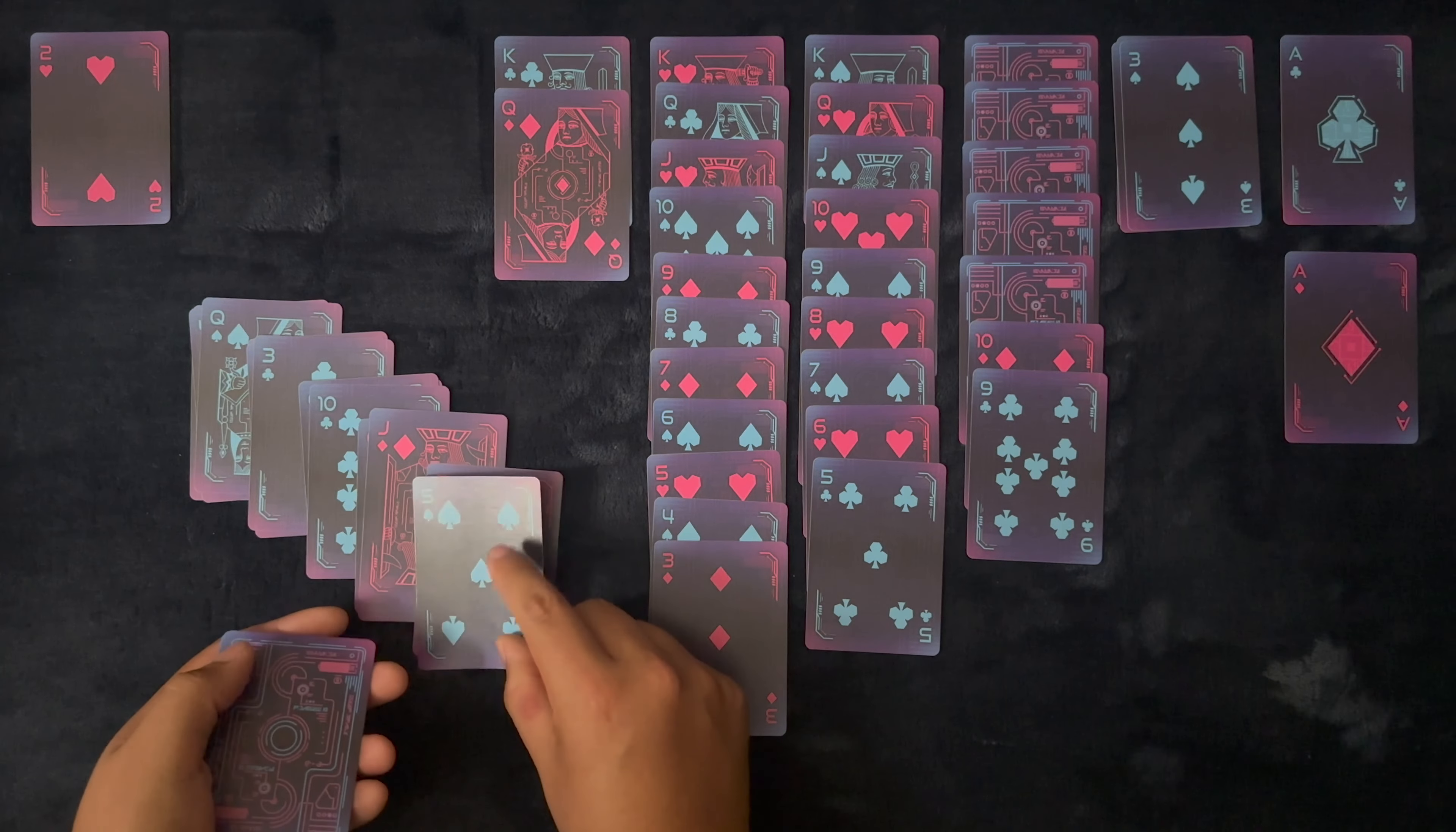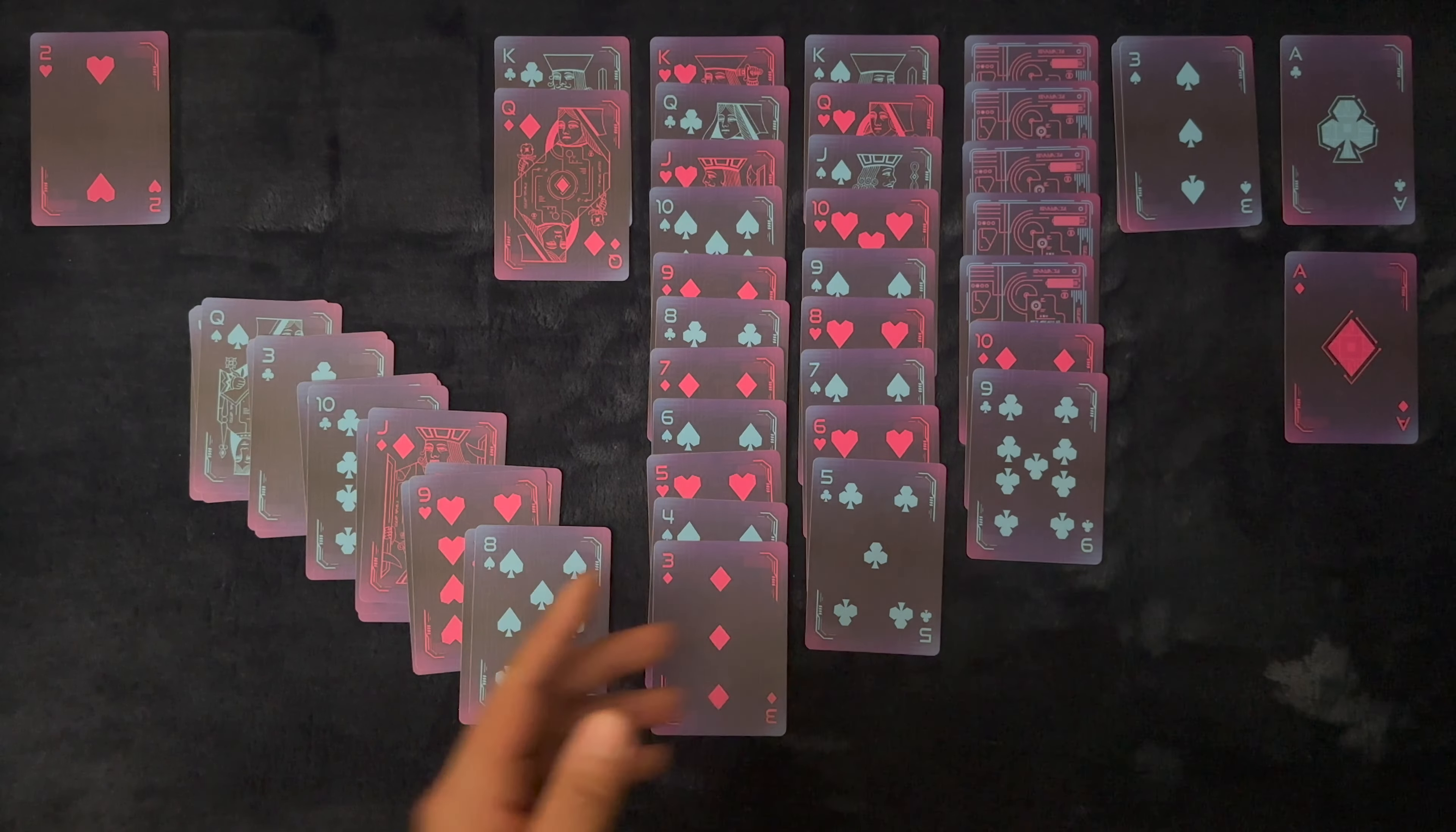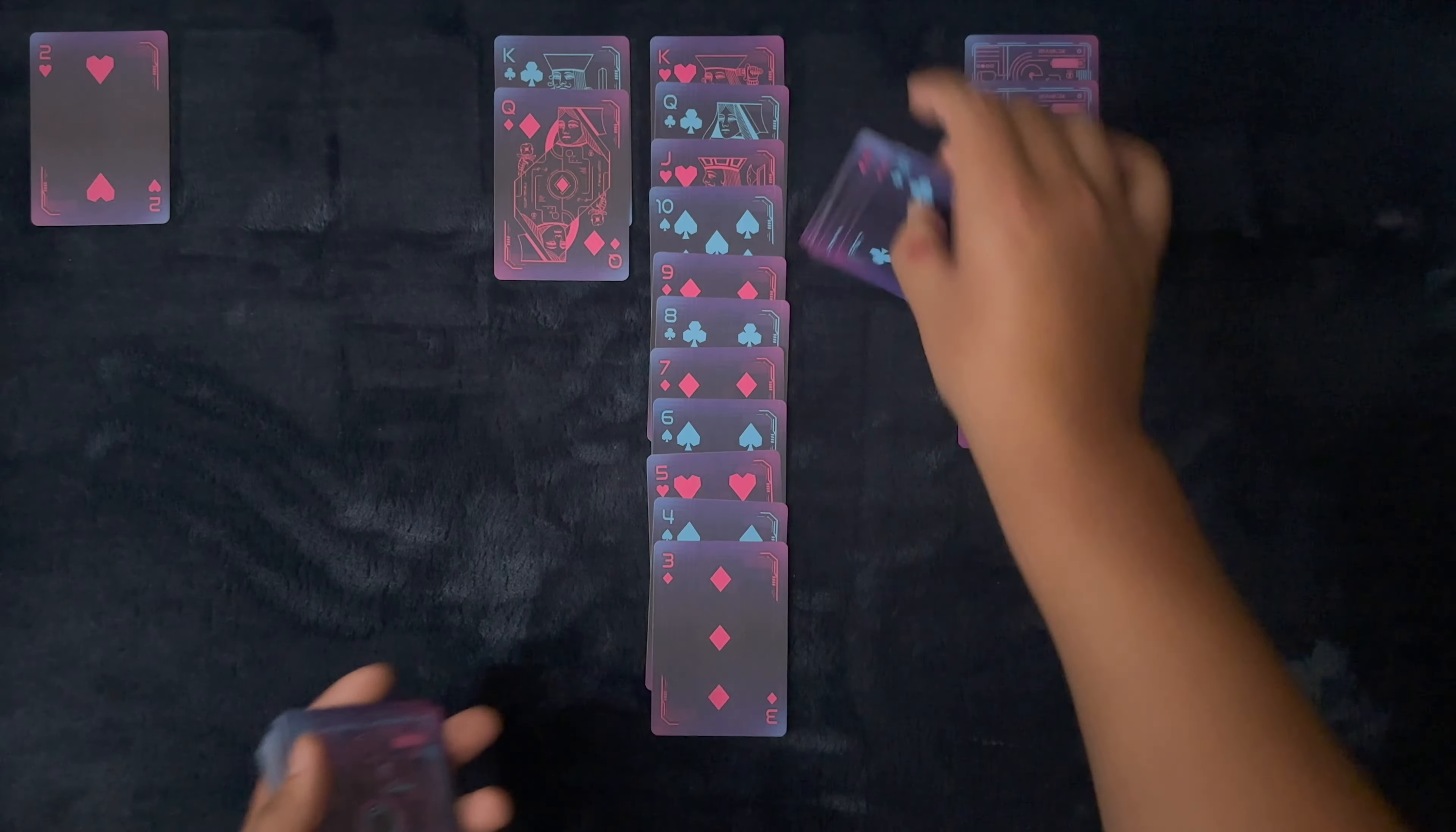So as good as it was, it went fairly quickly as there's nowhere for that queen. Three, ten, jack, nine, and lastly eight. Pretty good start. Let's see if we can keep it up in the next four.